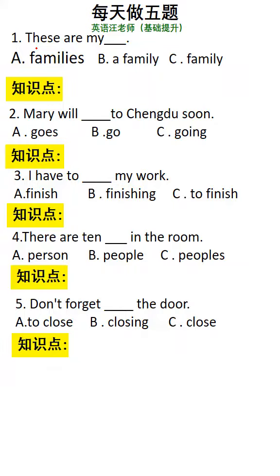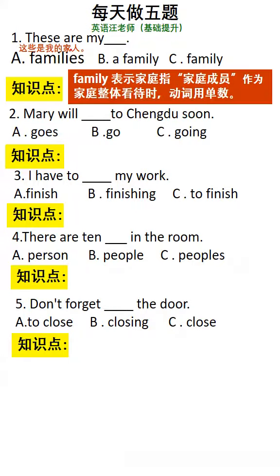每天做五题。第一题：These are my family. 这些是我的家人。家人作为家庭成员，我们应该用复数；而作为家庭整体，应该用单数。因此选择C选项。